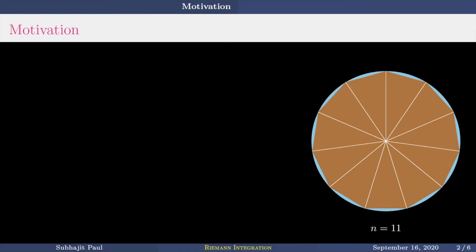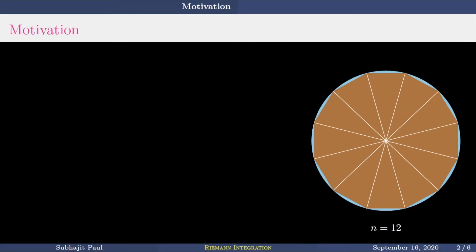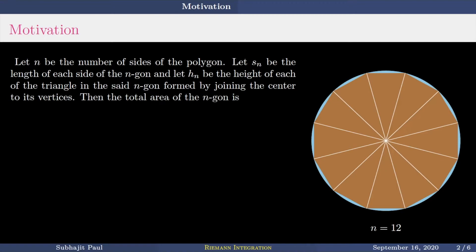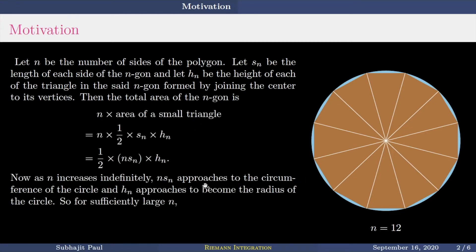As N increases indefinitely, N times s_N, that is the perimeter of the polygon, approaches to the circumference of the circle. So the perimeter approaches to the circumference of the entire circle. And h_N, the height, actually approaches to become the radius of the circle.